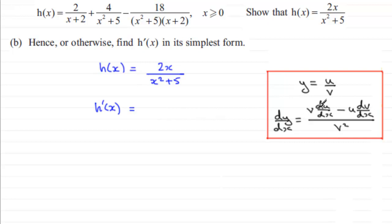and we multiply it by the differential of the numerator. Differential 2x with respect to x is 2. Then we subtract and we take the numerator 2x and we multiply this by the differential of the denominator.